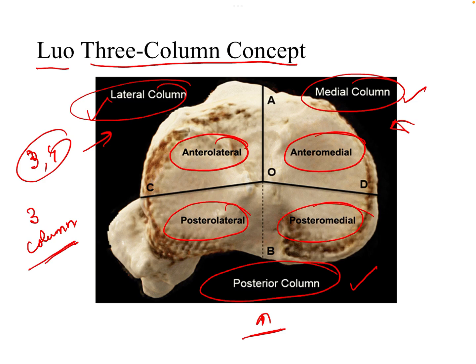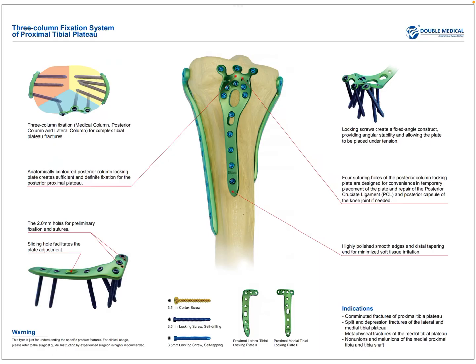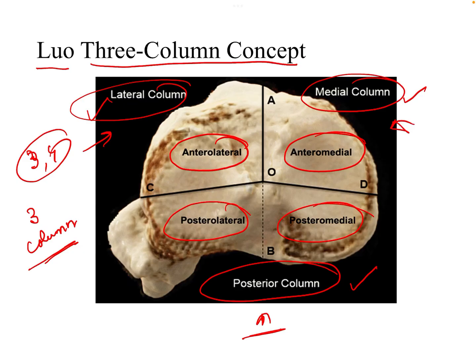The 3-column concept also guides treatment management — whichever column is involved must be fixed. If all 3 columns are involved, three plates are used: one for the lateral, one for the medial, and one for the posterior column. An example of a 3-column fracture requiring 3 plates for fixation illustrates this approach. These are the various classifications used for tibial plateau fractures.